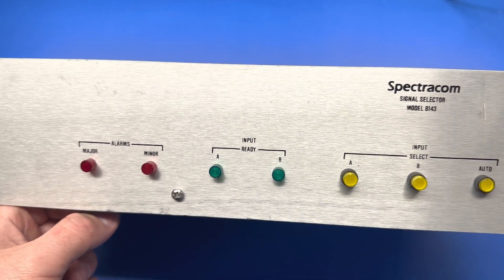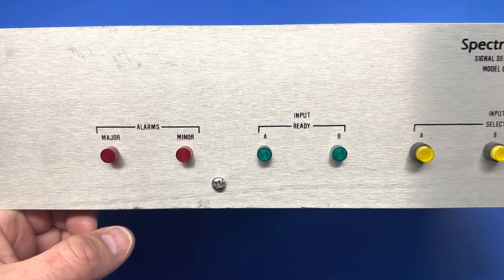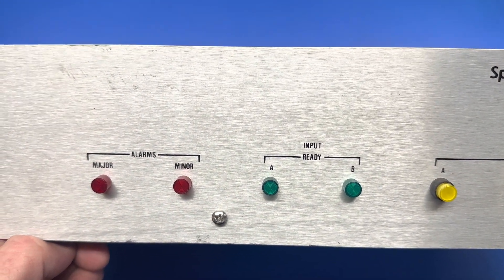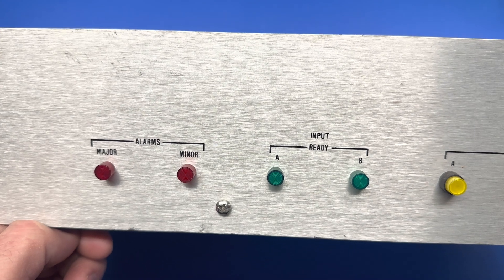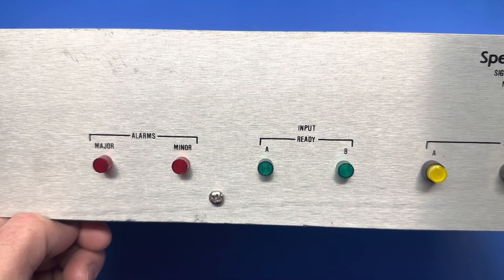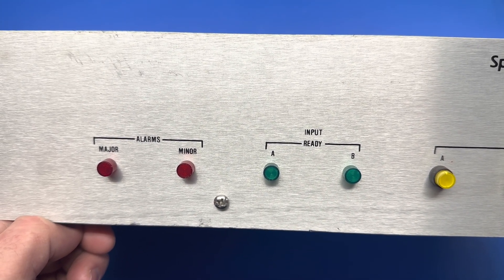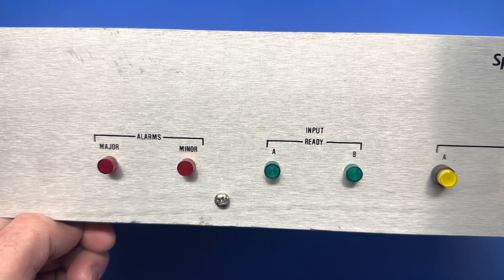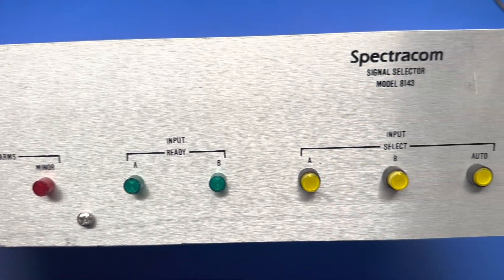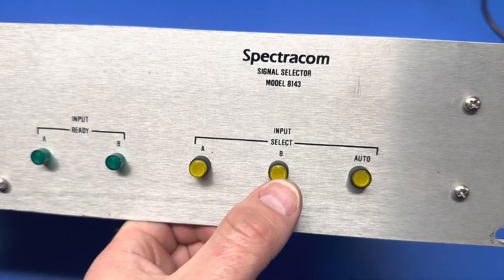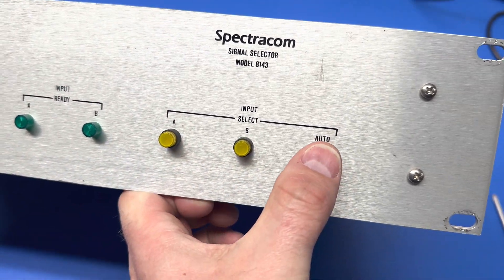The front panel is pretty basic. You've got your alarm. The major alarm goes off if neither of the two frequency inputs are active. Minor alarm will go off if one of the two is out. You can manually select between them by pressing these buttons or you can go to auto.